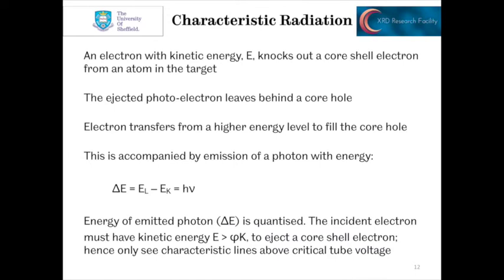An electron with kinetic energy E knocks out a core shell electron from an atom in the metal target. The ejected photoelectron leaves behind an empty core hole. This is an unstable configuration, so an electron transfers down from a higher energy level to fill that core hole, and accordingly there is the emission of a photon with energy proportional to the difference in energy levels between the two electron orbitals. This is why we need a certain critical tube voltage to see these characteristic lines — the electrons must have sufficient energy to knock out an electron from the core shell.